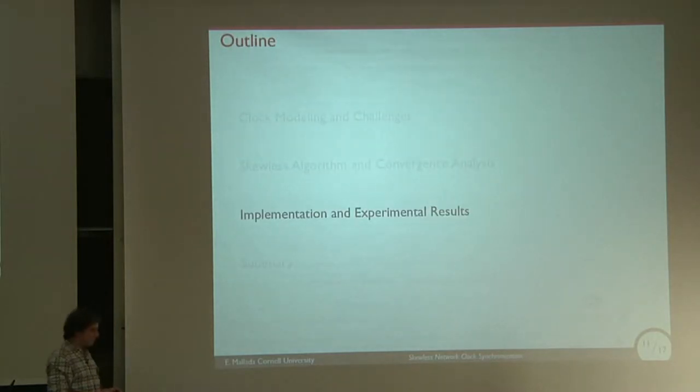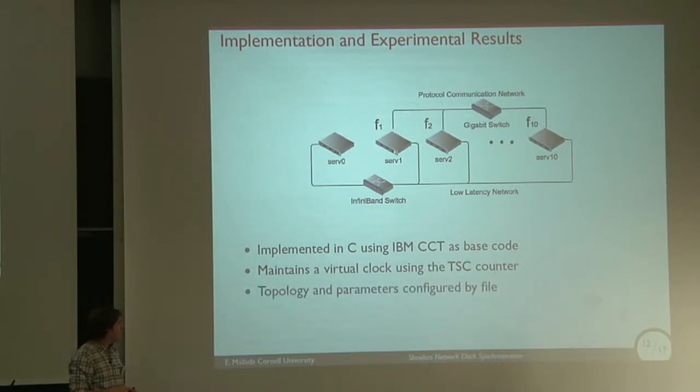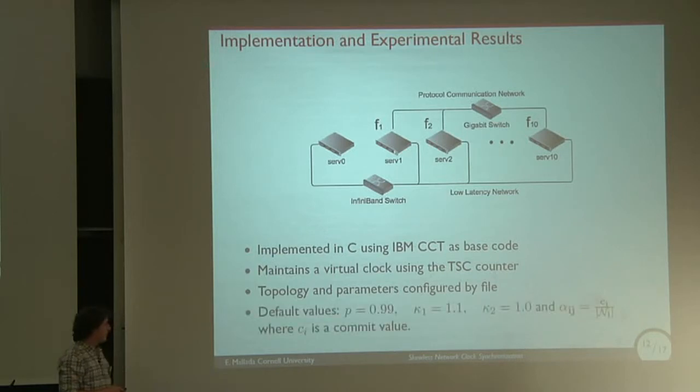We implemented this protocol. We tested on a cluster of IBM blade servers. The code is in C. We used IBM CCT solution as our base code. We maintain a virtual clock. We don't use the OS clock since we want to correct the frequency ourselves. We use the TSC counter as our source of timing. Everything is configured in a file. In the experimental results, I'm going to use these default values. Alpha is uniform among all the different neighbors of each individual node, and cᵢ is some constant gain value.